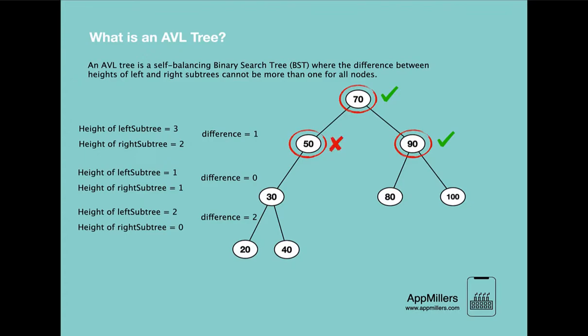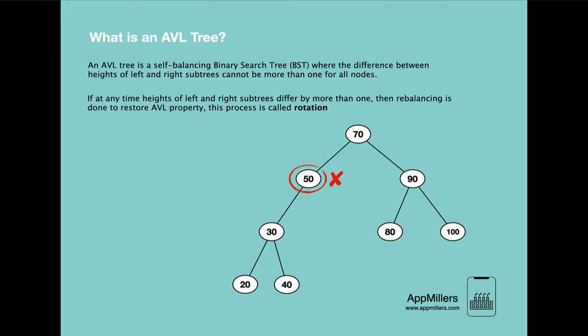So the question is: is there any way that we can make this node confirm to the property of an AVL tree — that is, make it balanced? The answer is yes. We can do that by rebalancing the tree. If at any time the height of left and right subtrees differ by more than one, rebalancing is done to restore the AVL property. This process is called rotation. We will learn how to do rotation in upcoming lectures, but for now you just need to know that whenever any node fails to follow the AVL property, rotation is needed for rebalancing.